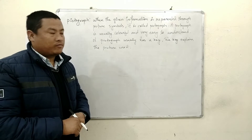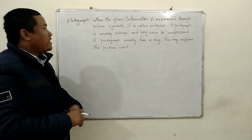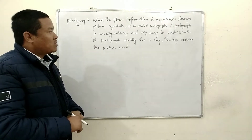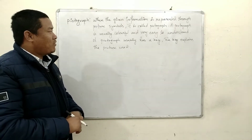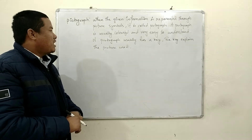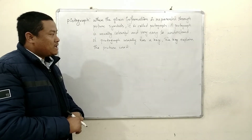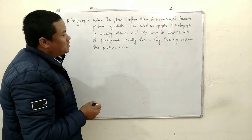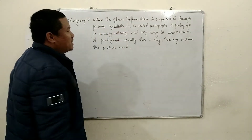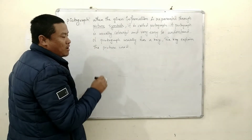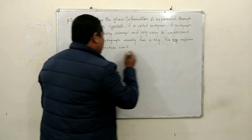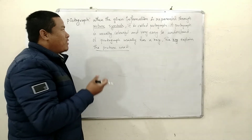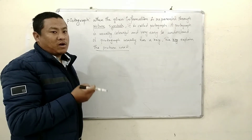Now children, let us first understand what is a pictograph. When the given information is represented using pictures or symbols, it is called a pictograph. A pictograph is usually colorful and very easy to understand. A pictograph usually has a key — the key explains the picture used. I will show you how to use the key in the first pictograph question.